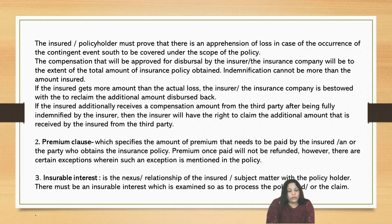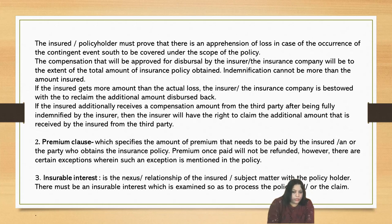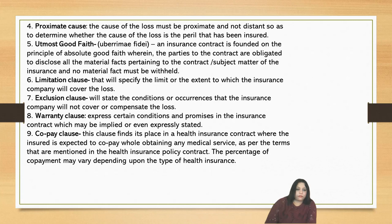The next is the concept of insurable interest, which we already discussed at length. Insurable interest is a nexus of the relationship of the insured. A clause pertaining to insurable interest has to find its place in a valid insurance contract — it is a nexus of the relationship of the insured or the subject matter with the policyholder. There must be an insurable interest, which is examined so as to process the policy or the claim. Next is the proximate cause — the cause of the loss must be proximate and not distant, so as to determine whether the cause of the loss is a peril that has been insured.